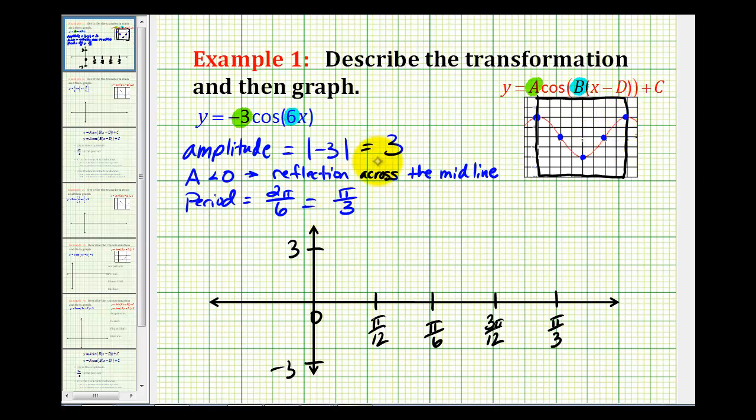But we do have to be careful about this one because a was negative three, it's reflected across the midline, or in this case, the x-axis. So instead of starting at a maximum of three, we're actually going to start at a minimum of negative three.